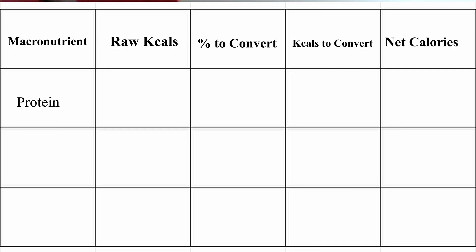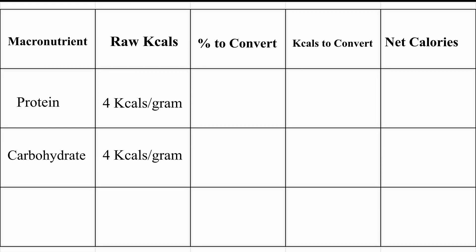The raw calories from each macronutrient are as follows: per gram of protein you get 4 calories, per gram of carbohydrates you get about 4 calories of energy, and per gram of fat you get 9 calories of energy.